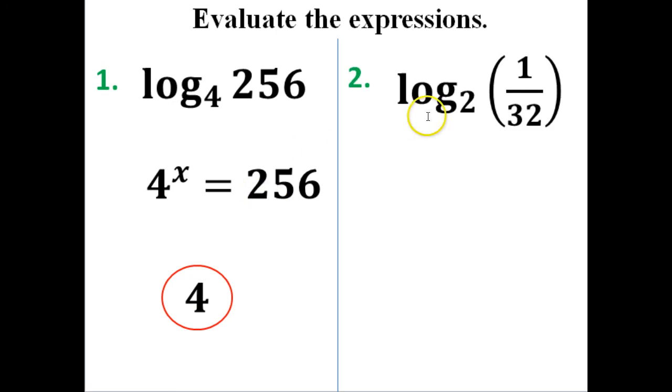Now let's look at one that's similar, only this one ends up being a fraction. With this one, I'm going to do the same thing. I'm going to rewrite it in exponential form. So it'll be 2 to the something power, and it would equal this 1 over 32.